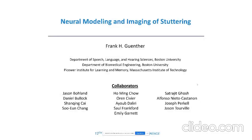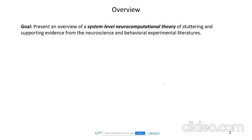Thanks very much for that nice introduction, and also thanks to the organizers for inviting me. This is an excellent conference and I've really enjoyed the presentations I've seen so far. I want to start by acknowledging my many collaborators on this work, including former and current members of the Speech Neuroscience Lab at Boston University, as well as members of Suan's lab at University of Michigan and Joe Paquel's lab at MIT. The goal of my talk today is to present an overview of a system-level neurocomputational theory of stuttering and supporting evidence from both neuroscience and behavioral literatures.